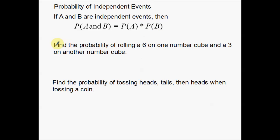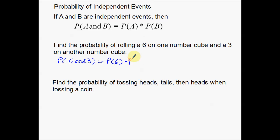Just like this example: find the probability of rolling a six on one number cube and a three on another number cube. I'm looking for the probability of rolling a six and rolling a three — the 'and' word tells me I want both of those to occur. Since these events are independent of one another, this is simply the probability of rolling a six times the probability of rolling a three with the other number cube. Remember, we have two number cubes here.